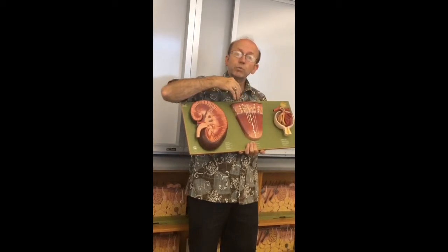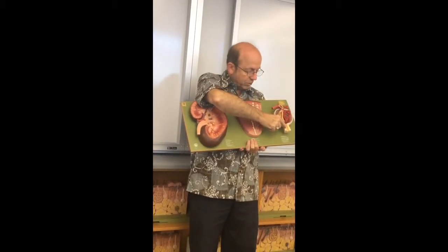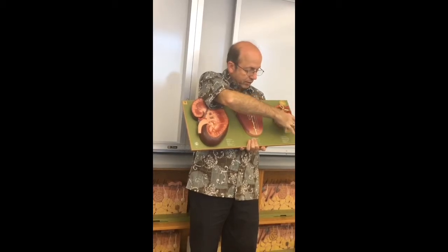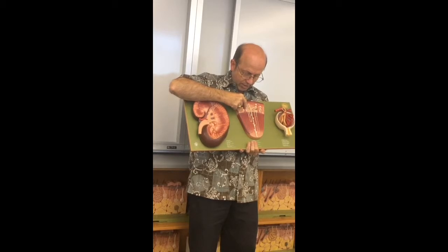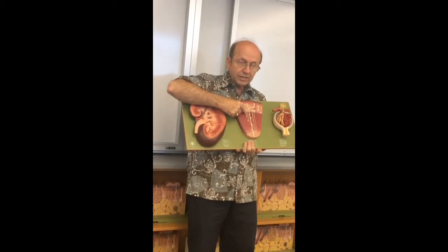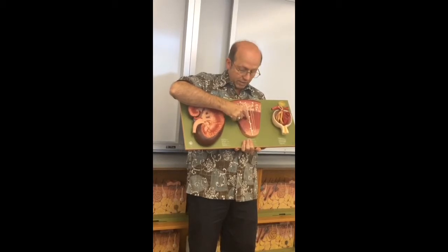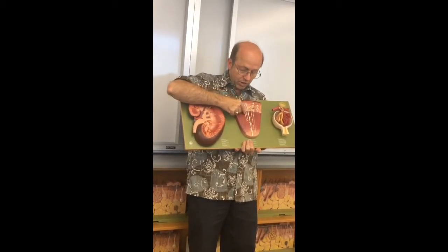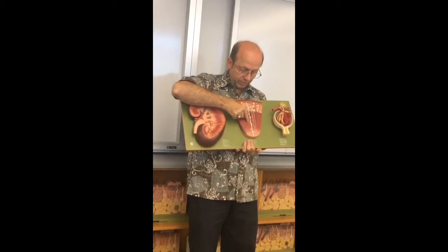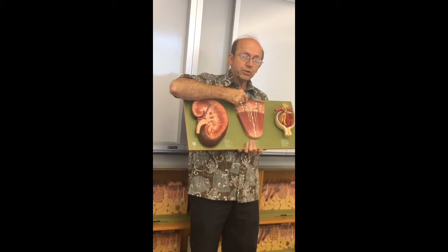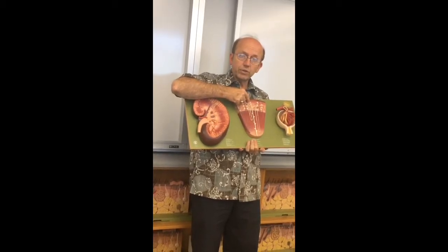But there's also a renal tubule. You can see the tubule leaves this capsule here — it leaves and has some twisting. When it leaves, it twists. That's called the proximal convoluted tubule. Then you have the descending limb of the nephron, the loop of the nephron, and the ascending limb of the nephron. This is called the loop of Henle. This ascending limb does some twisting here too.